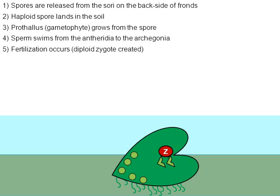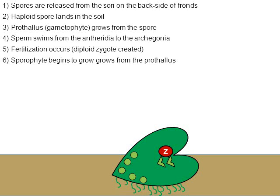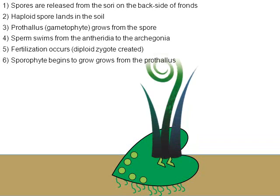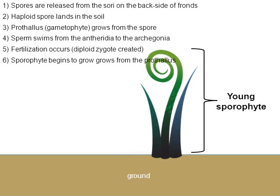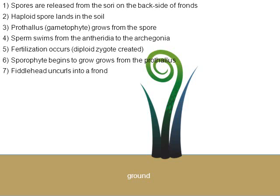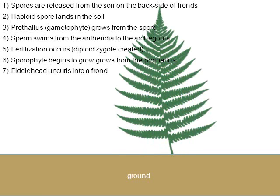The zygote marks the beginning of the diploid stage called the sporophyte stage. Zygotes are microscopic, but the zygote will begin to grow upward towards sunlight. Here we have the young sporophyte stage still physically attached to the gametophyte stage — the prothallus. Eventually the prothallus, the heart-shaped structure, will just shrivel up and die, and what will remain is the sporophyte stage. As time goes by, a fiddlehead will uncurl into a frond, restarting the cycle.